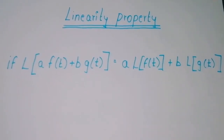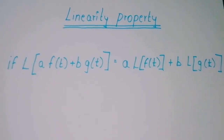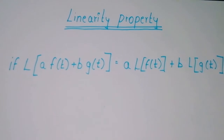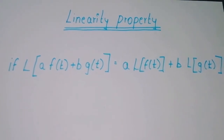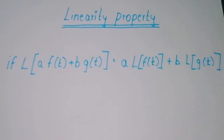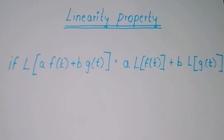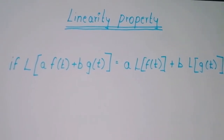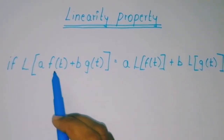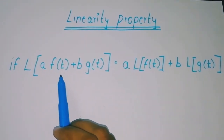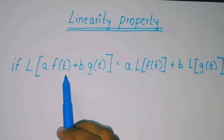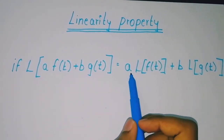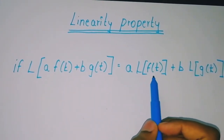Coming to the formula of linearity property: if Laplace of a·f(t) + b·g(t) is equal to a·Laplace of f(t) plus b·Laplace of g(t). We multiply the constant with each function.